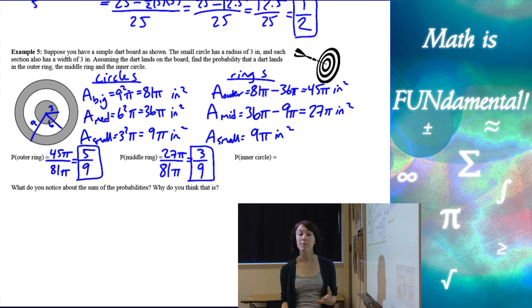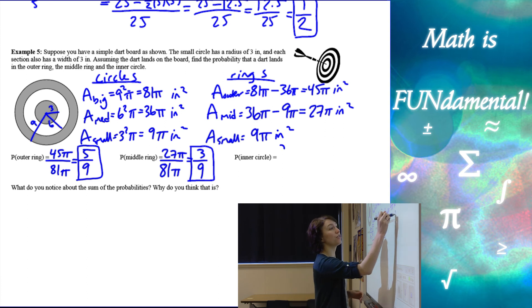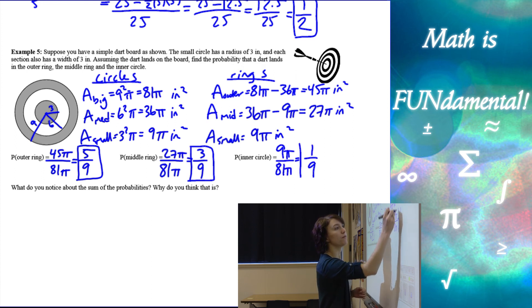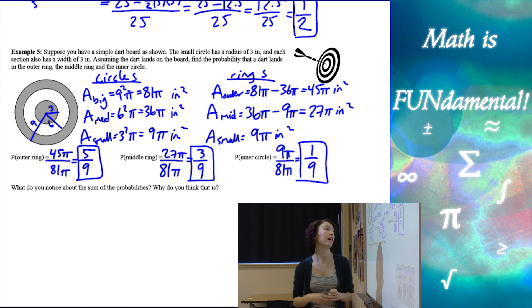So our probability of getting our dart in the middle ring is smaller than the outer ring. Alright, and then the probability of our inner circle is 9 pi over 81 pi, which is going to be 1 9th. So a lot smaller to get our dart in the center of the dart board than the other pieces.